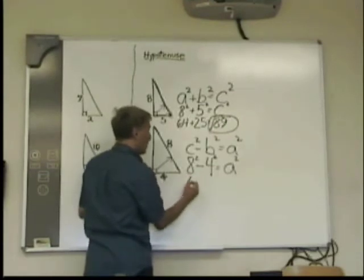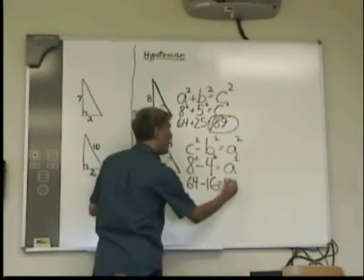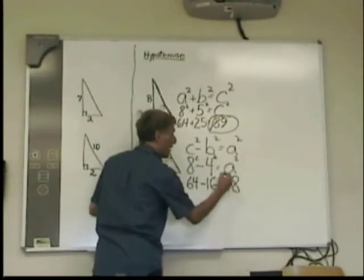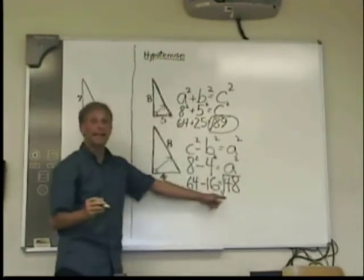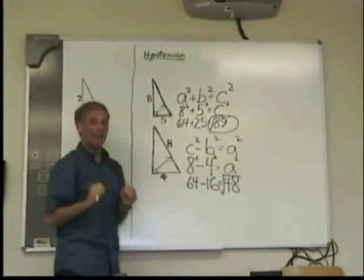That gives me 64 minus 16, and that equals 48. Again, I take the 48 and I square root it. And this time, I can break it down.